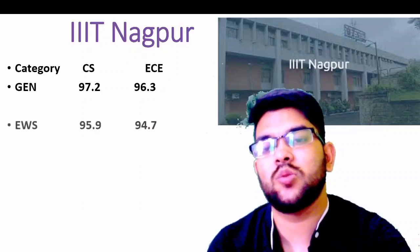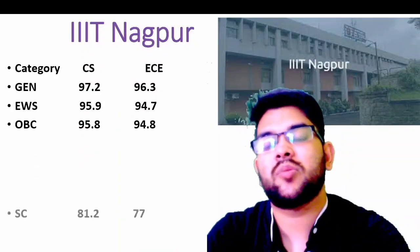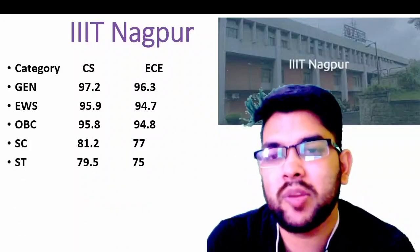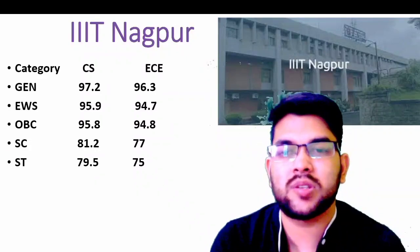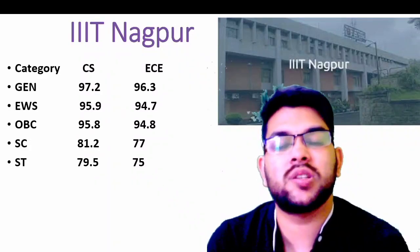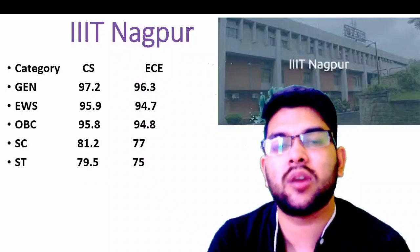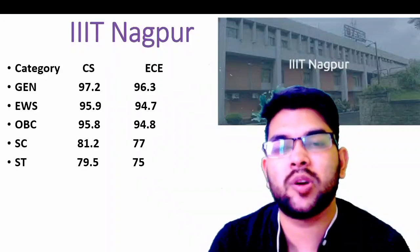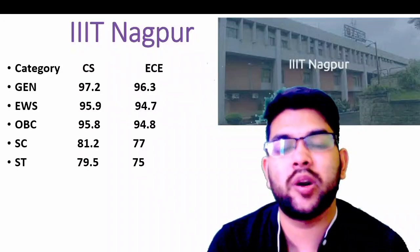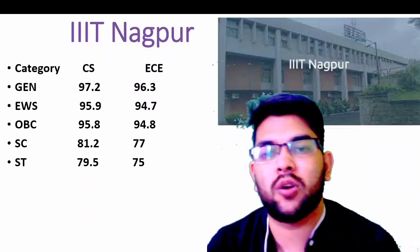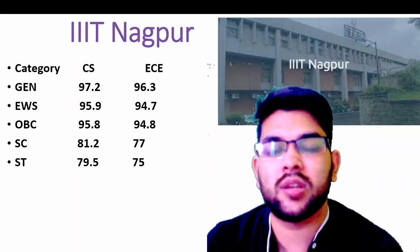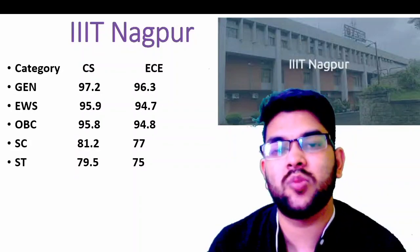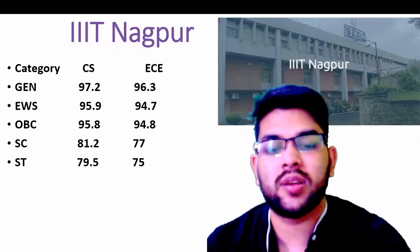For IIIT Nagpur: General — CS 97.2. EWS — 95.9. OBC — 95.8. SC — 81.2. ST — 79.5 percentile required. Once again, the information I am providing is relevant to JOSAA counselling, not CSAB. In CSAB you may get a college at a lower percentile — I will provide that separately. Based on my 3–4 years of experience and current year trends, I will provide that information soon on this channel. Please subscribe to get that update.